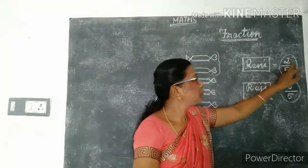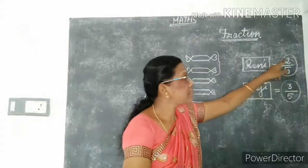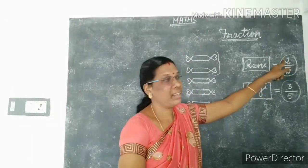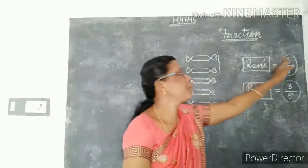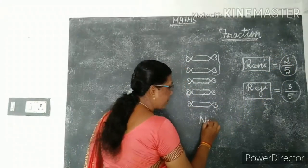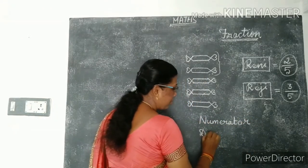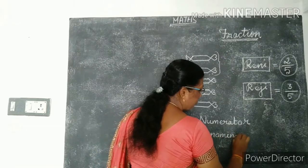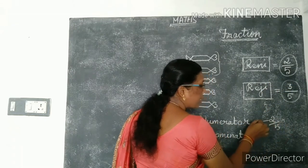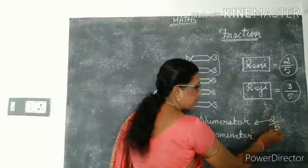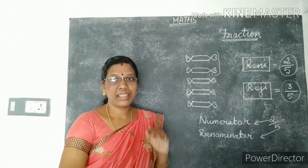Here we have two parts: upper part and lower part. This upper part we call numerator. This lower part we call denominator. So the numerator of two by five is two. If you are taking two by five, then this two is numerator — upper part — and this five is denominator. Fraction, numerator, denominator.